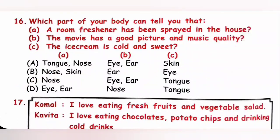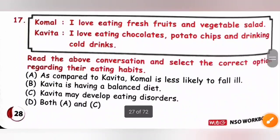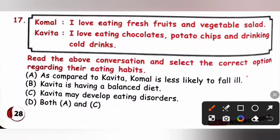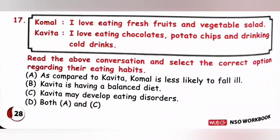Seventeenth. Komal. I love eating fresh fruits and vegetable salad. So, fresh fruit and vegetable salad are protective food. Kavita. I love eating chocolates, potato chips and drinking cold drinks. So, these are rich in junk food. It leads to obesity and often she will fall ill. Read the above conversation and select the correct option regarding their eating habits. Option A. As compared to Kavita, Komal is less likely to fall ill. Yes, because she is having protective food which keep her away from ill. B. Kavita is having balanced diet. No, she is having junk food. C. Kavita may develop eating disorders. Yes. So, both A and C. Option D is the correct answer.